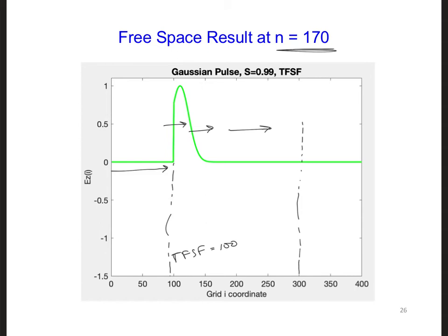Now try modeling an infinite PEC plate halfway through the primary grid. So right at 200 here, try putting a PEC. Don't model this PEC in the incident grid, which should be just free space.